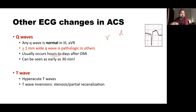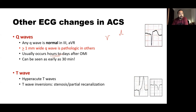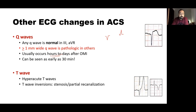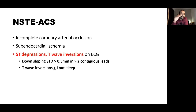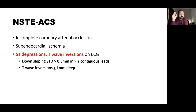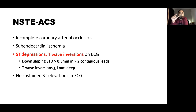T waves can have various morphologies — there could be hyperacute T waves or reperfusion T waves. Regarding non-ST elevation myocardial infarction (NSTEMI): this happens because of an incomplete coronary artery occlusion leading to subendocardial ischemia. Typically there is a down-sloping or horizontal ST depression of at least 0.5 mm in two contiguous leads, or T wave inversions at least 1 mm deep. There should be no sustained ST elevations for a diagnosis of NSTEMI, though transient ST elevations can still occur.